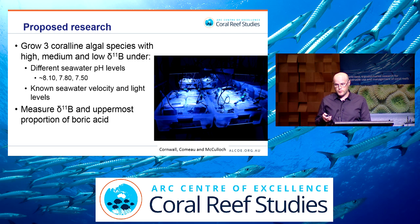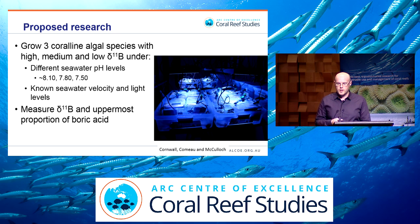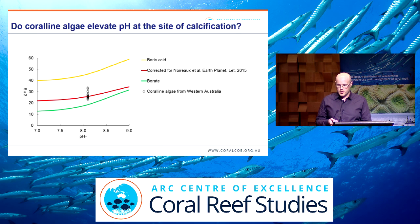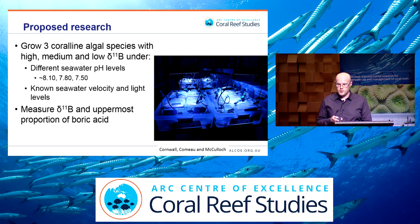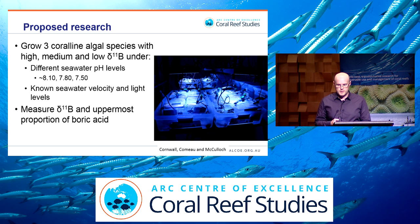What we really need to know is how, for a specific species, their boron isotope values track as we decrease pH. We're growing three coralline algal species — one with high, one with medium, and one with low boron isotope values — under different seawater pH levels: 8.1 as an ambient control, 7.8 as an end-of-century ocean acidification scenario, and 7.5 as a physiologically extreme value. We're also controlling seawater velocity and light levels to control for external modification of pH within the diffusion boundary layer.